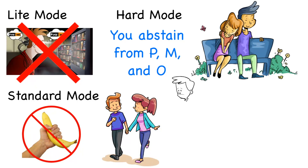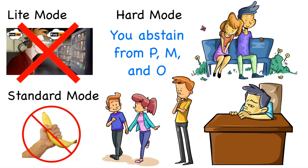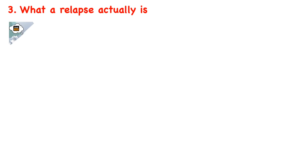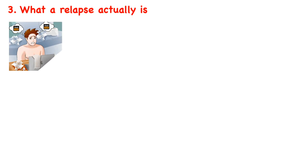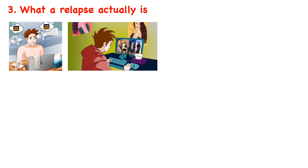Now it's your turn to choose which of these three levels of NoFap you're going to practice. The level you choose will determine what a relapse looks like for you. If you pay close attention, all three levels of NoFap share the need to abstain from adult content, because the main problem you're facing is being addicted to artificial sexual stimulation.